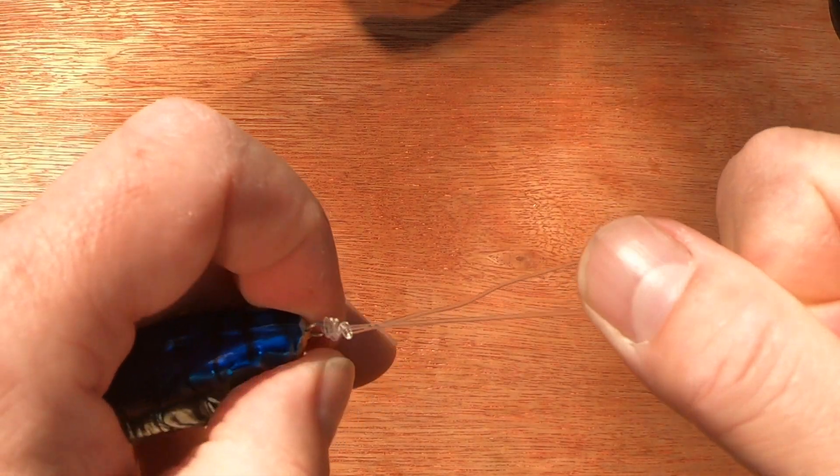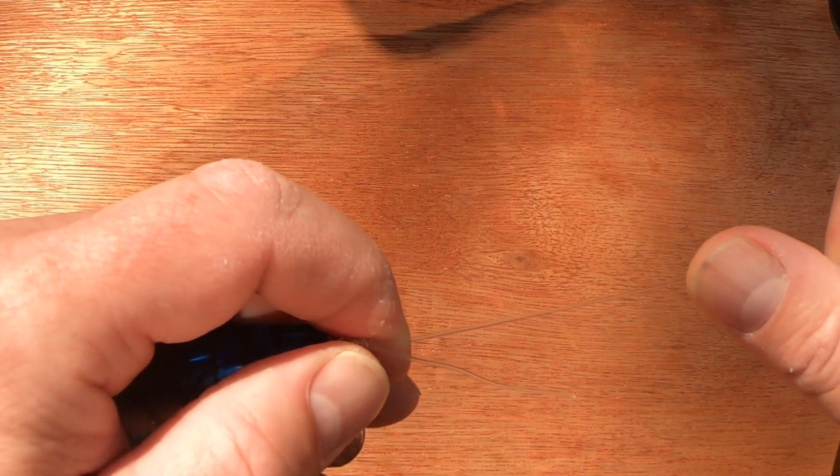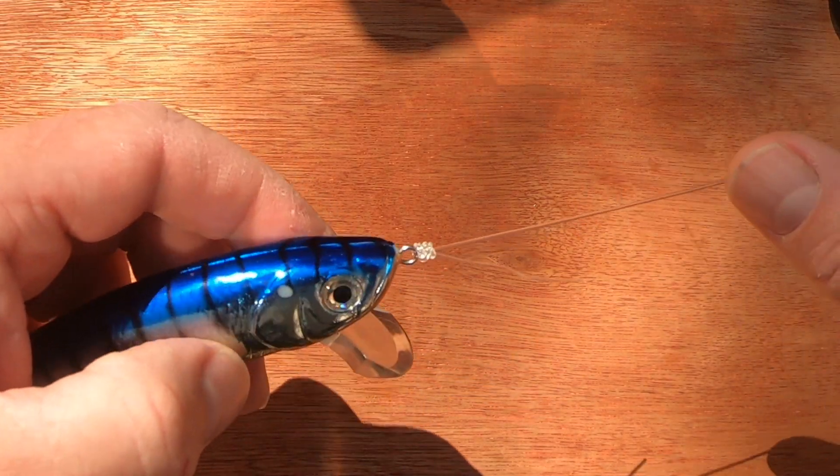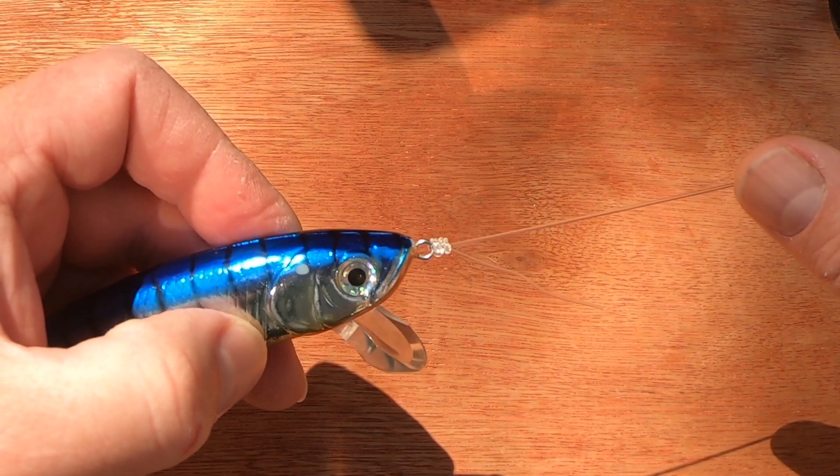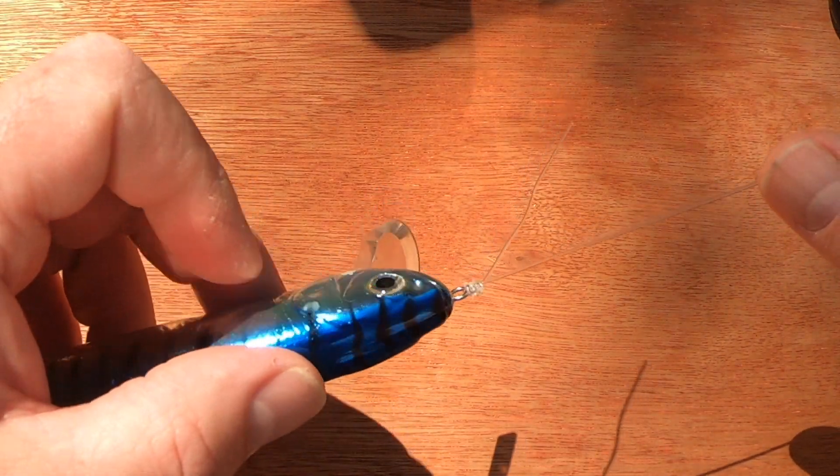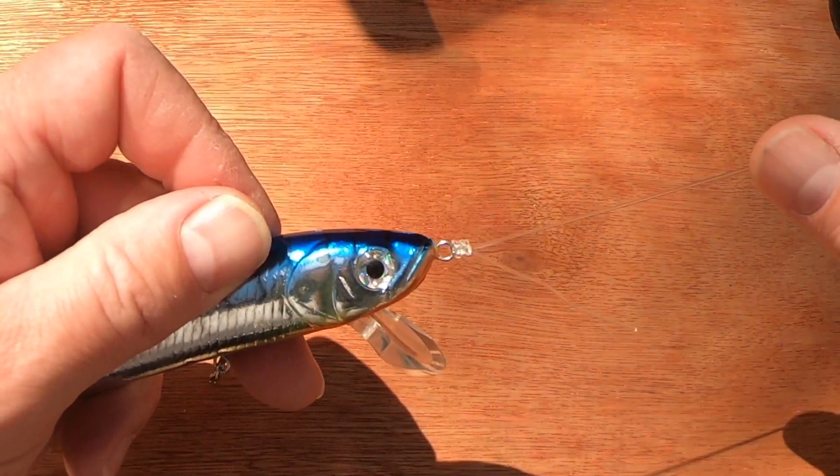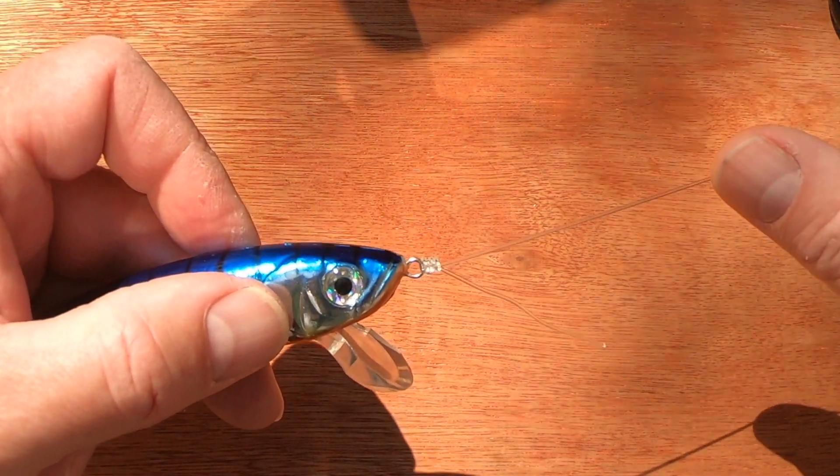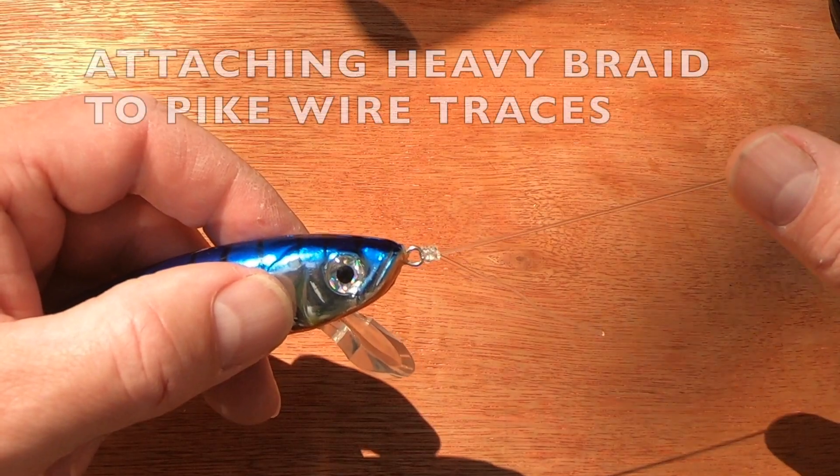Tease the coils with your fingertips to get them to sit nicely, and then pull tight. At this point I would normally pull tight with my teeth on the tag end, but as you can see that's cinched down quite nicely. There you've got your wraps.